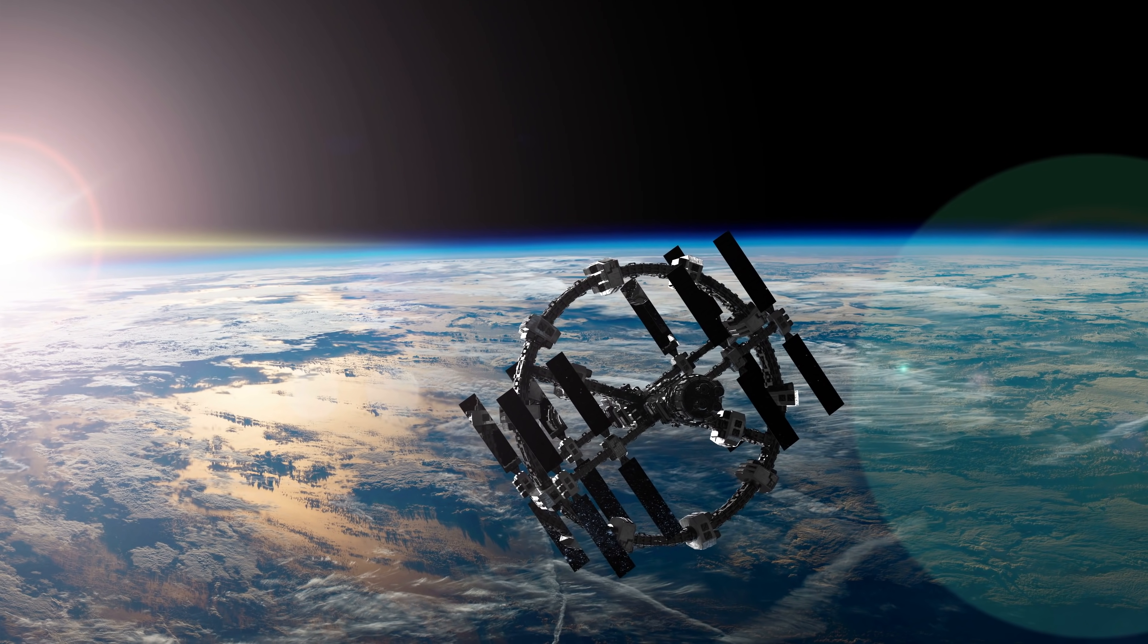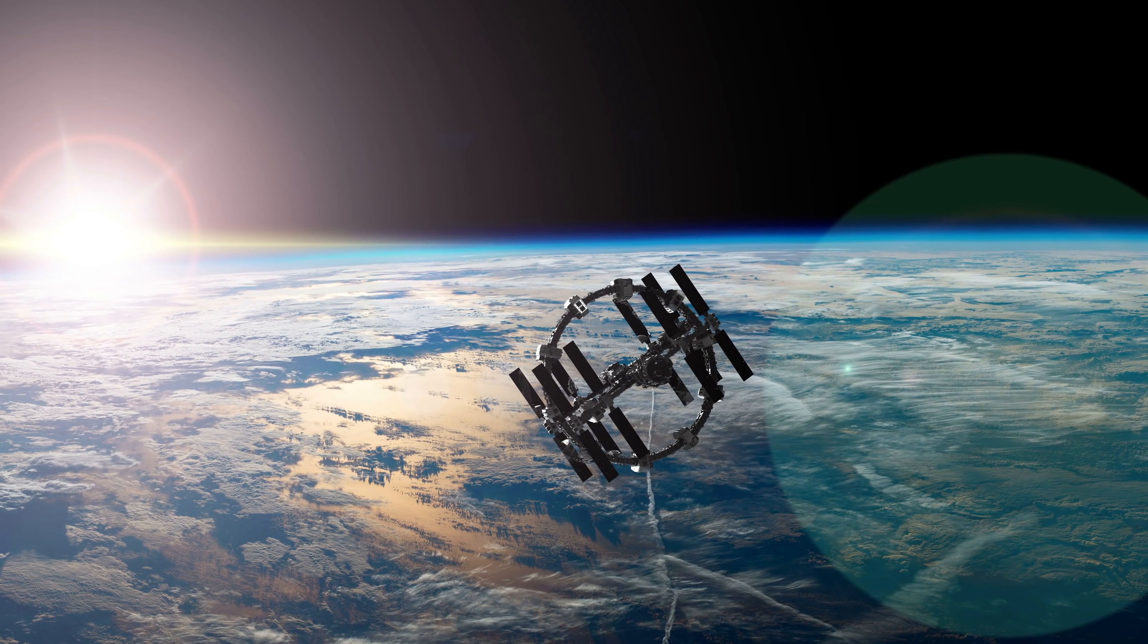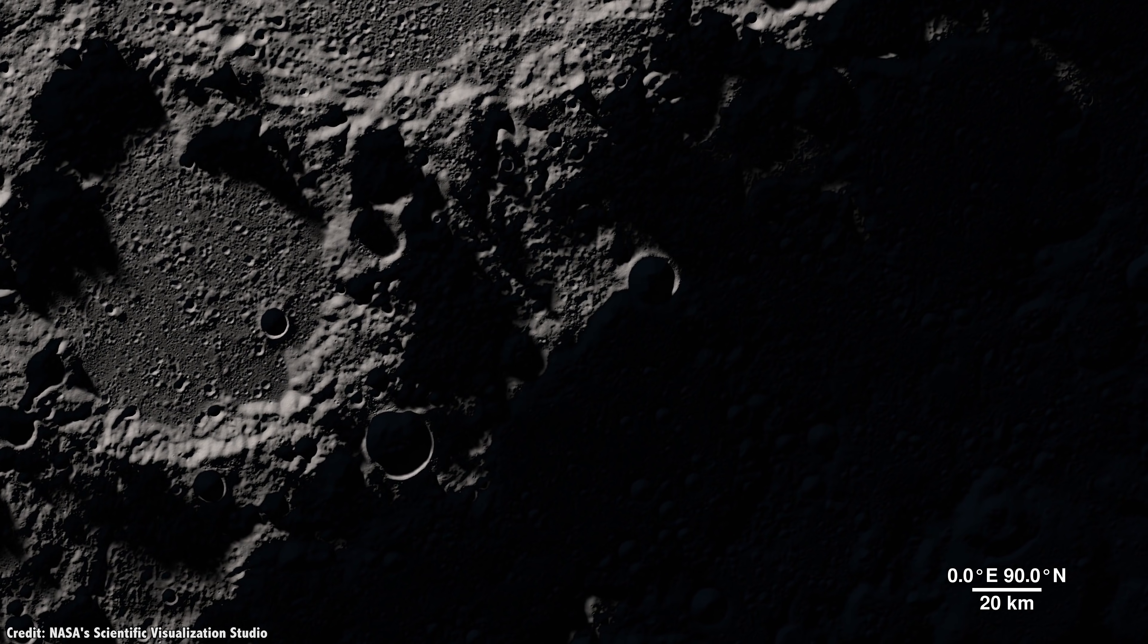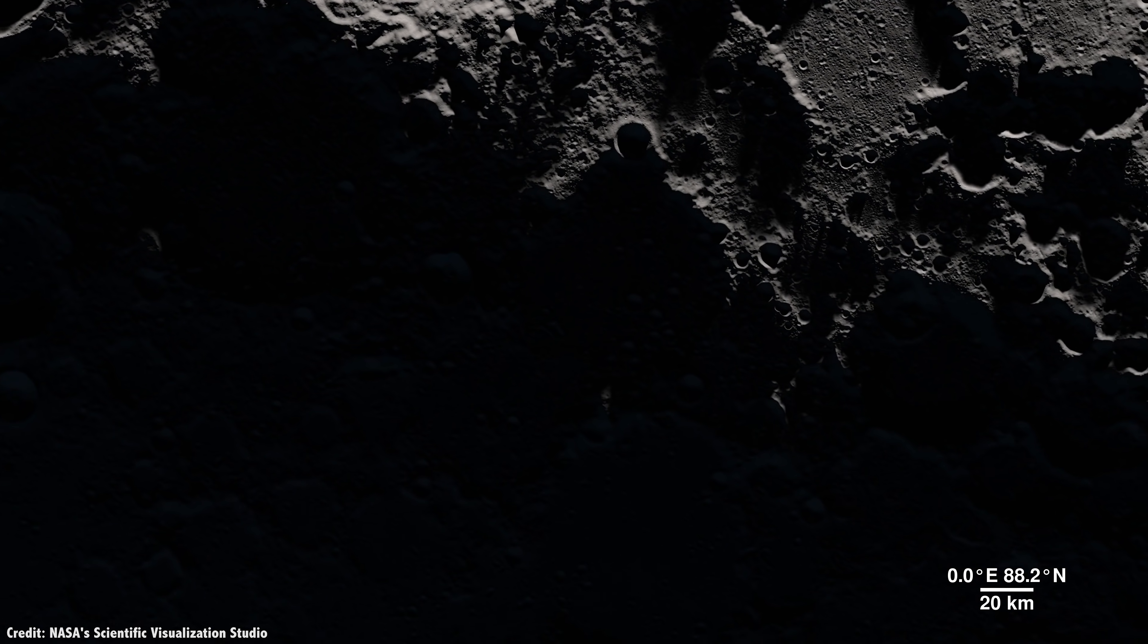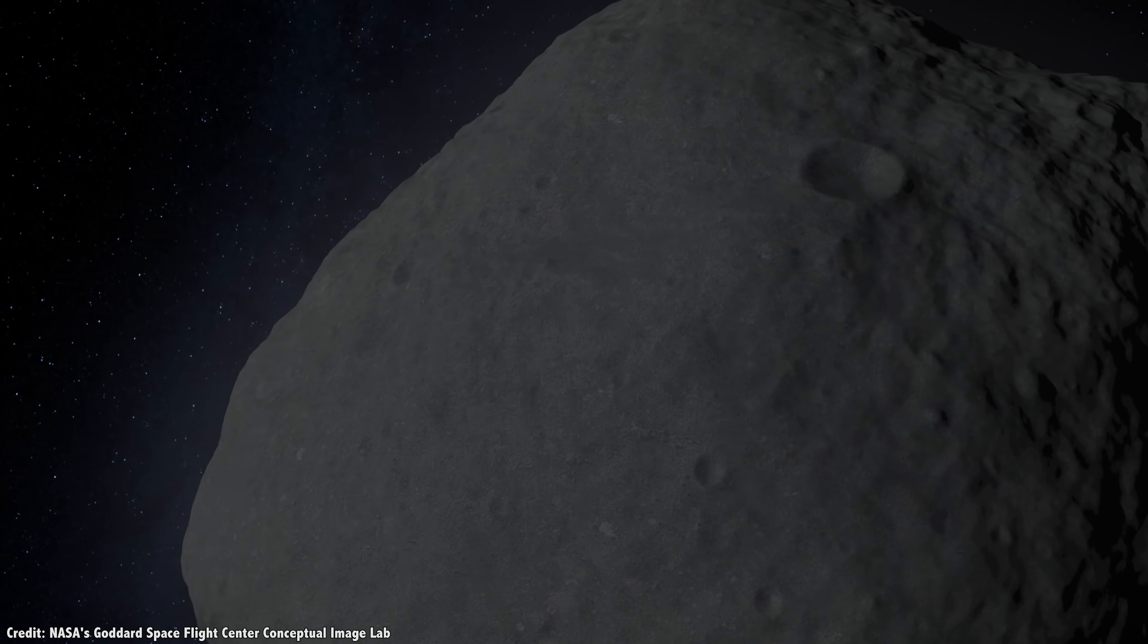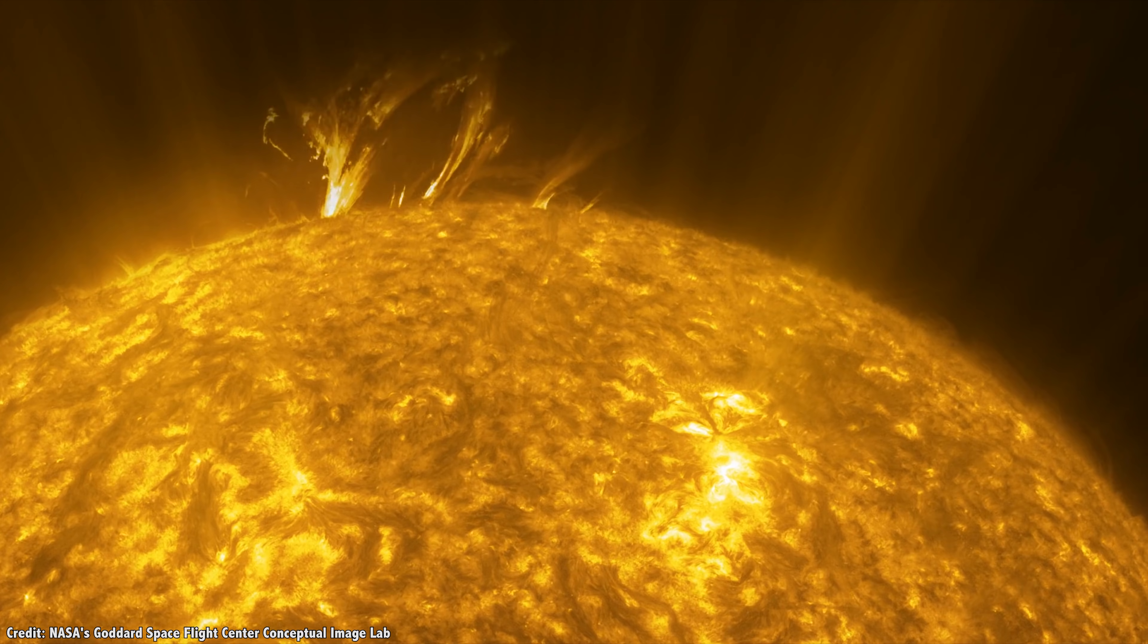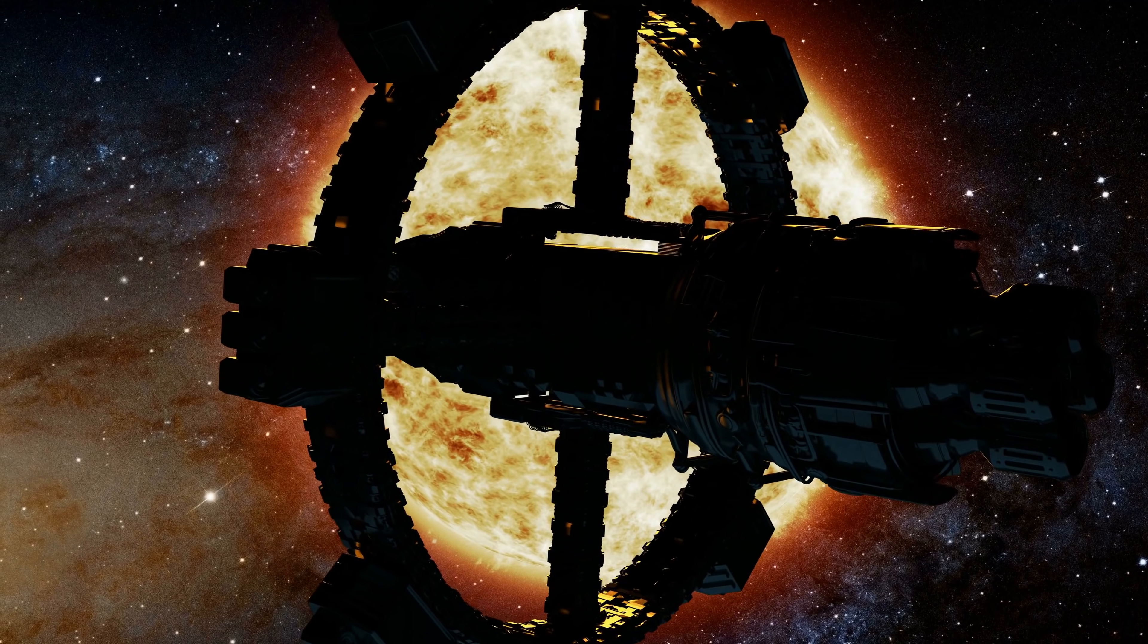The solar system really has everything we need to be able to survive in space for the long term. Every single element we have on Earth is out there in space. There are deposits of water ice across the solar system, from the permanently shadowed craters on the Moon to the comets and dwarf planets in the Kuiper Belt. The planets and even asteroids and comets have the metals and other minerals we'll need for our manufacturing. The Sun is blasting solar radiation across the solar system, and it's just there for the taking.